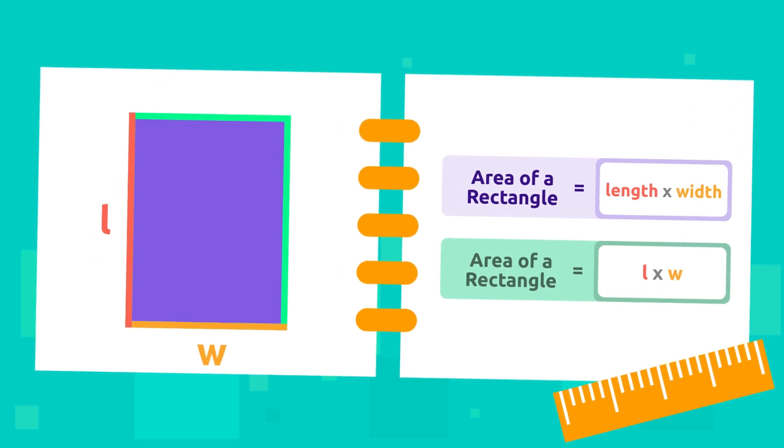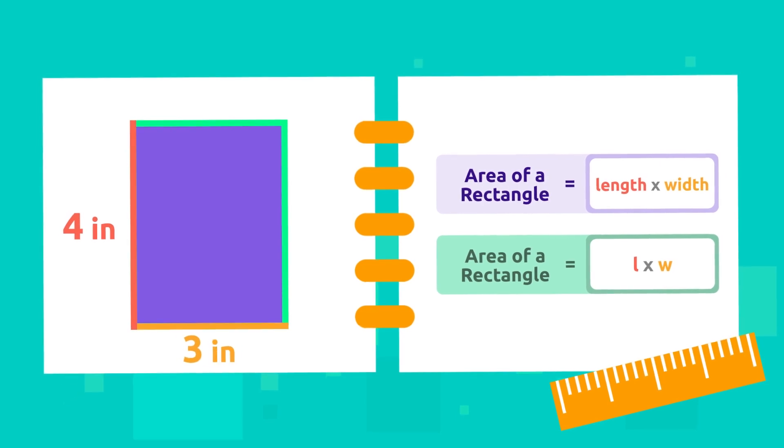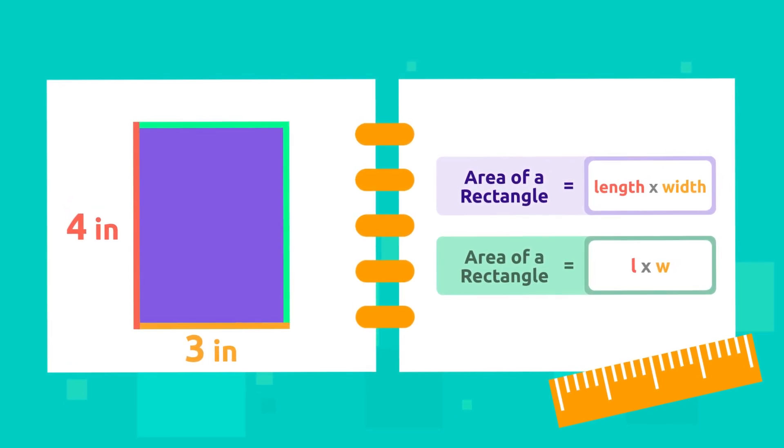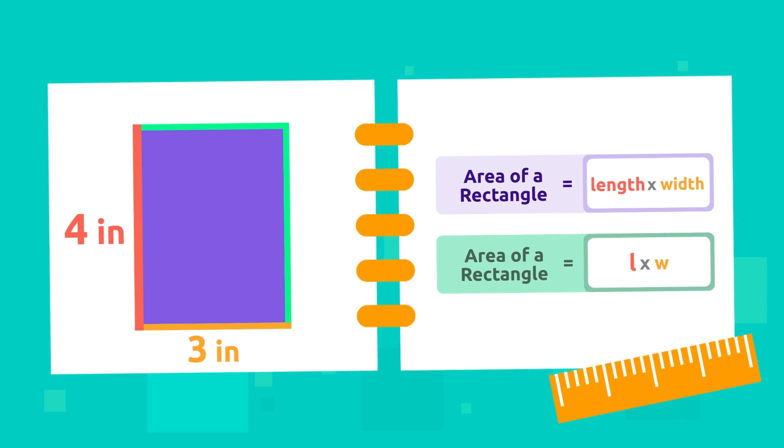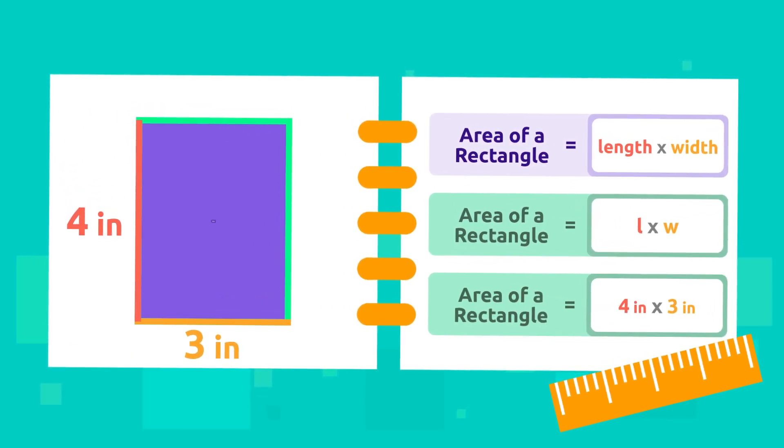Let's practice! This rectangle's length is 4 inches, and the width is 3 inches. As we said before, to calculate its area, we must multiply the length by the width. That is, 4 times 3 equals 12!